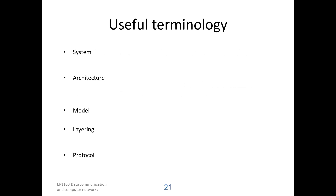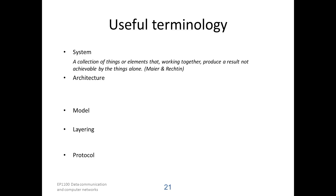Here I have selected five words of useful terminology for this course. We have system, architecture, model, layering, and protocol. A system is a collection of things or elements that working together produce a result not achievable by the things alone.